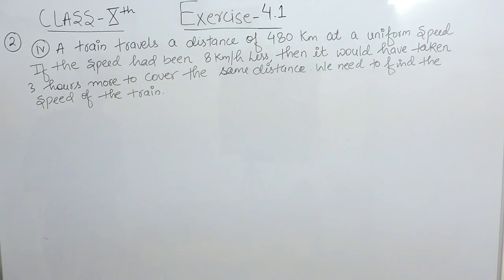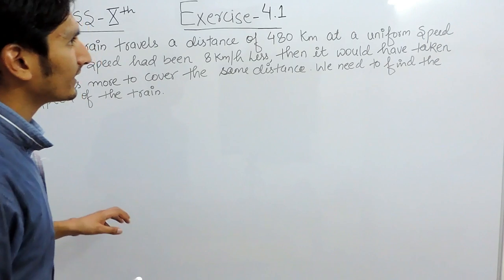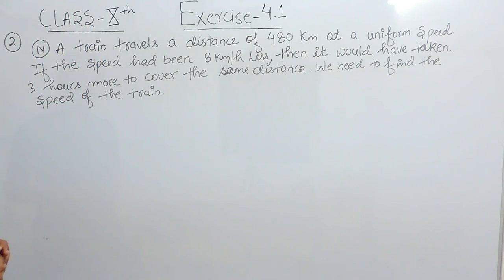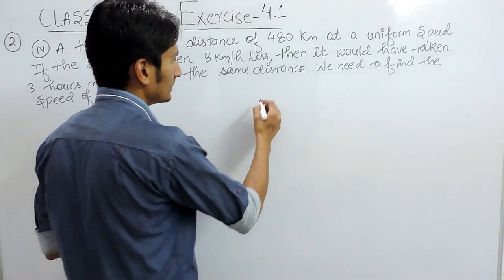The question says: A train travels a distance of 480 km at a uniform speed. If the speed had been 8 km per hour less, then it would have taken 3 hours more to cover the same distance. We need to find the speed of the train.